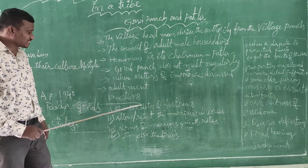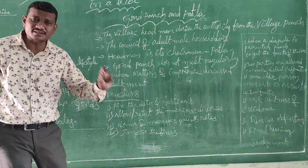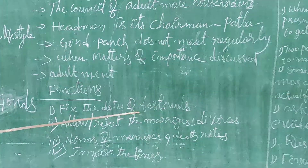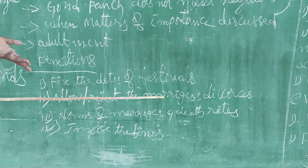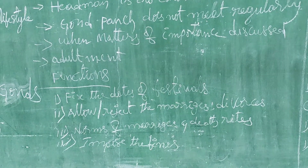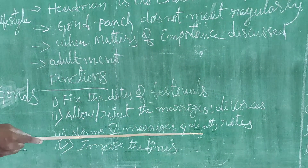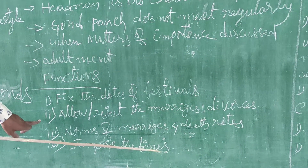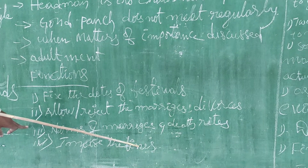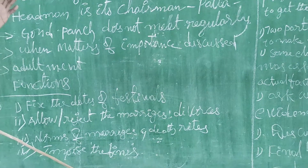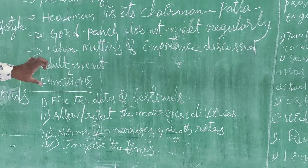The Gond Punch has several important functions. The first function is to fix the dates of festivals. The adult male household members, headed by the Patla, fix the dates of important festivals, allow or reject marriages and divorces, set down the norms for marriages and death rites, and impose fines on those who do not follow the rules. Sometimes they force people to leave the village. These are the important functions of the Gond Punch.